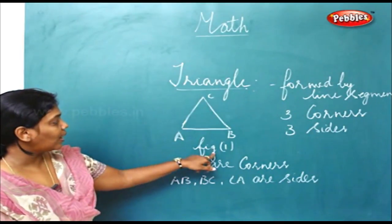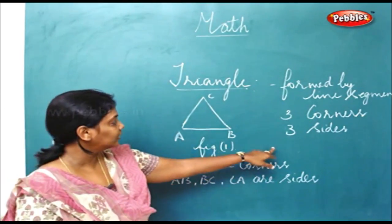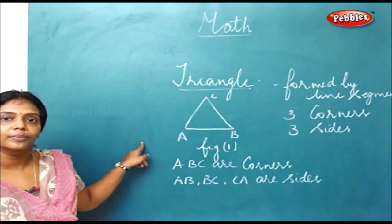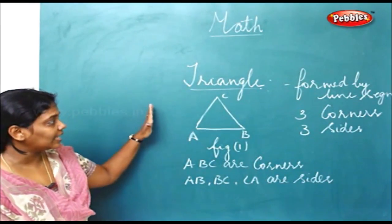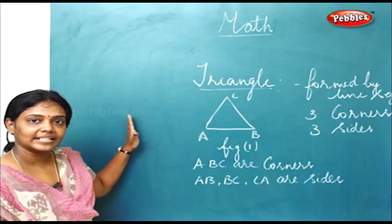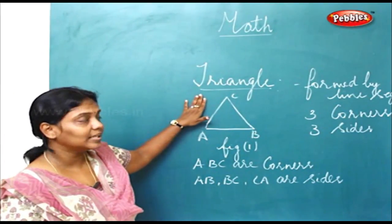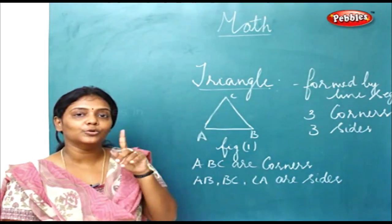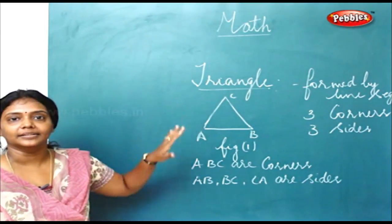So this is how you can form a triangle using a line segment. Figure 1 is done for you. Figure 2 and figure 3 you try doing by yourself. As we did using matchsticks to form a line segment for a rectangle and a square, in the same way we try doing it for a triangle also.